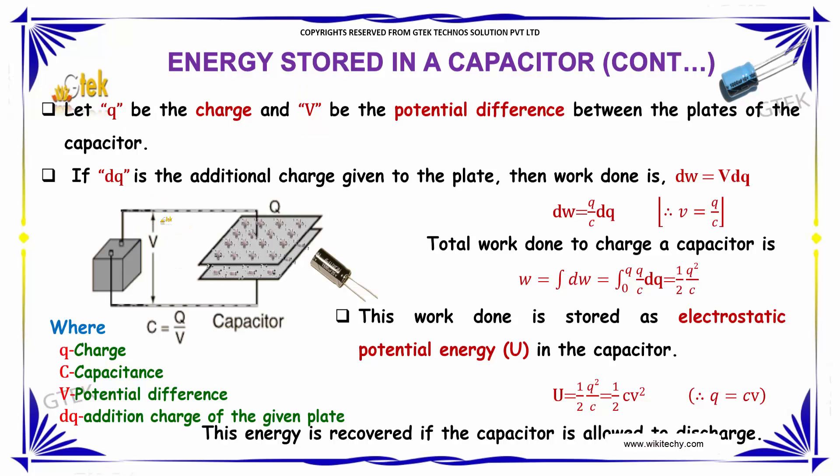If dq is the additional charge given to the plate, then the work done is given as dw equals V into dq. From this we can yield dw equals q by C into dq, where we have substituted the value for V.